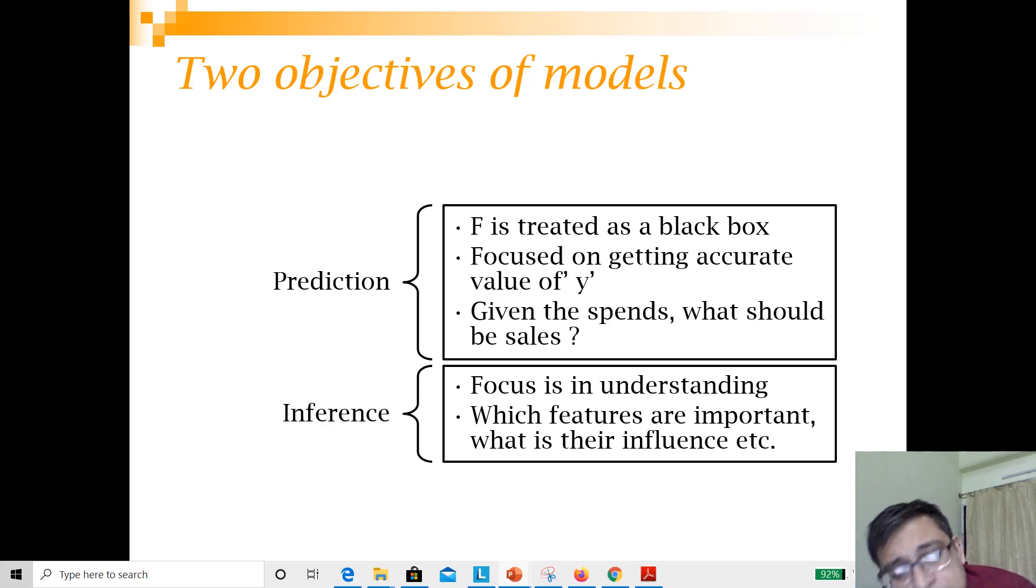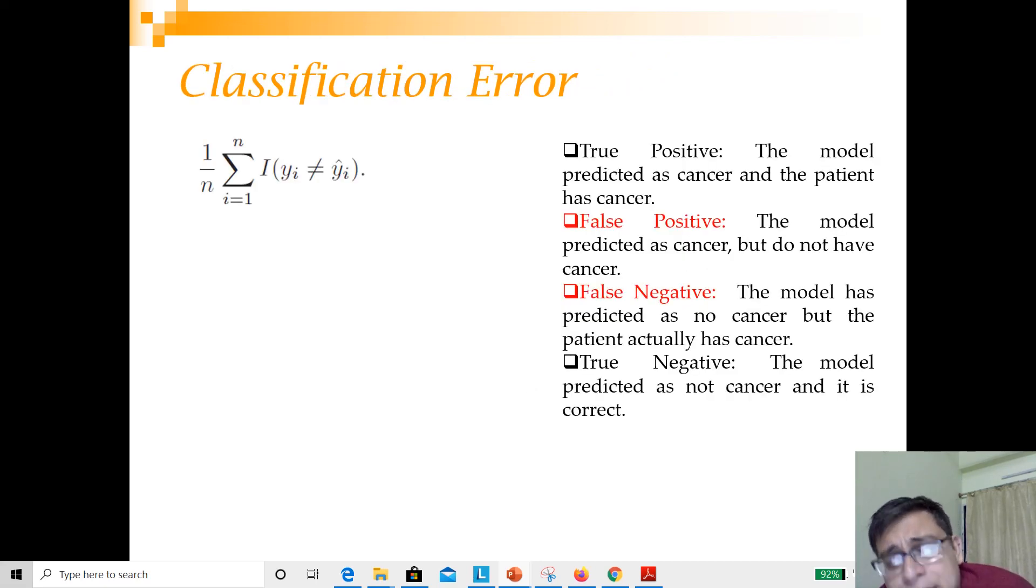Now let's see how we evaluate models. The simplest way to evaluate a classifier is to check where your prediction is not equal to actual. yi indicates the actual value and ŷi indicates what you have predicted. This indicator gives a value 1 if yi and ŷ is not matching and takes a value 0 if they are matching. Essentially, you want to minimize this.